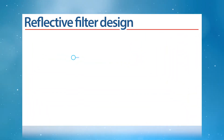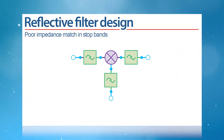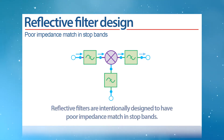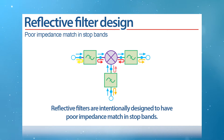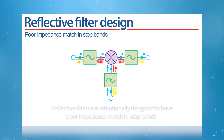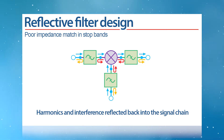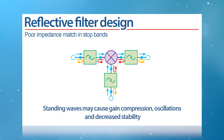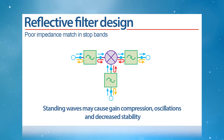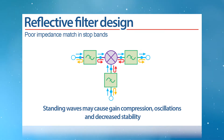This is commonly done using the out-of-band reflective property of filters. Reflective filters are intentionally designed to have poor impedance match in stop bands. This causes the undesired reflected signals, including harmonics in stop bands and noise, to reflect back into the signal chain. The result is a standing wave in the chain, which in turn may cause gain compression, oscillations, and decreased stability.